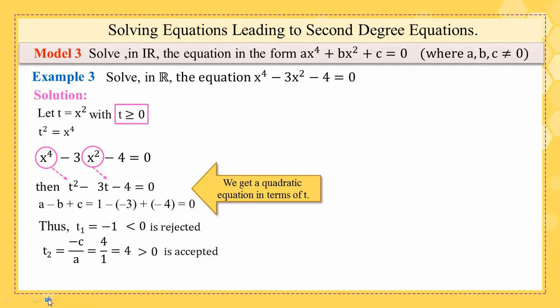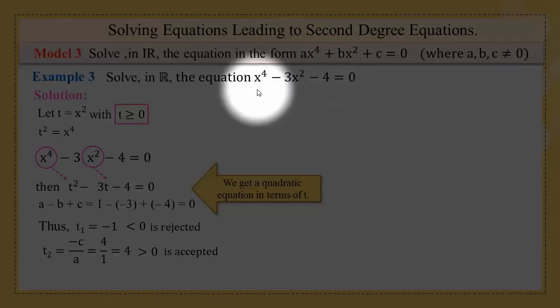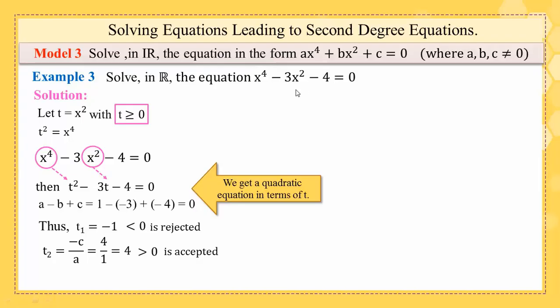Do you think that we have finished solving this equation? In fact, unfortunately no, because we are solving this equation which is in terms of x, and this is our goal: to find its solution. So we must find x1 and x2, not t1 and t2. Now how to find x?